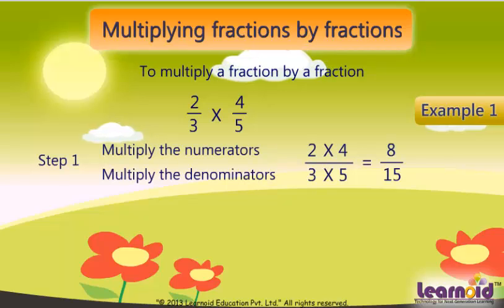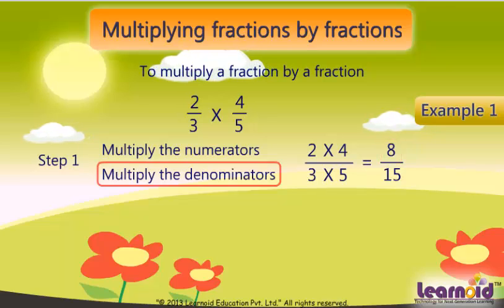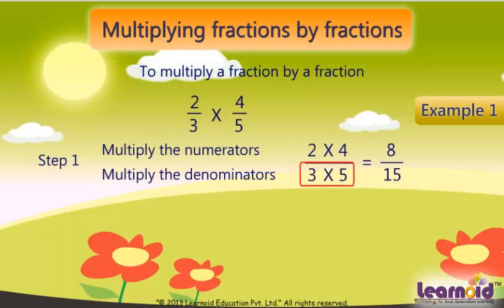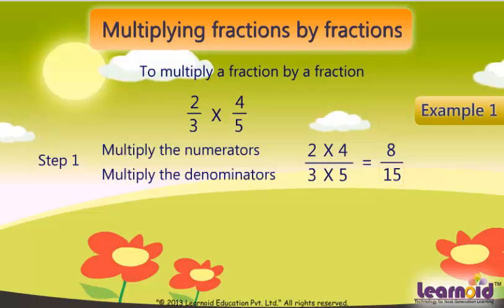First, we will multiply the numerators, 2 and 4, which is equal to 8. And then multiply the denominators, 3 and 5, which is equal to 15. We got 8/15.